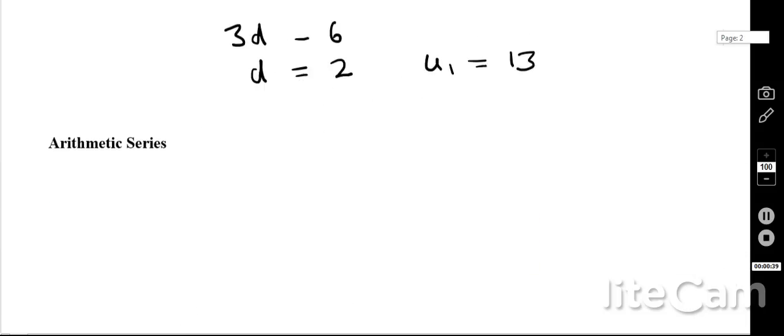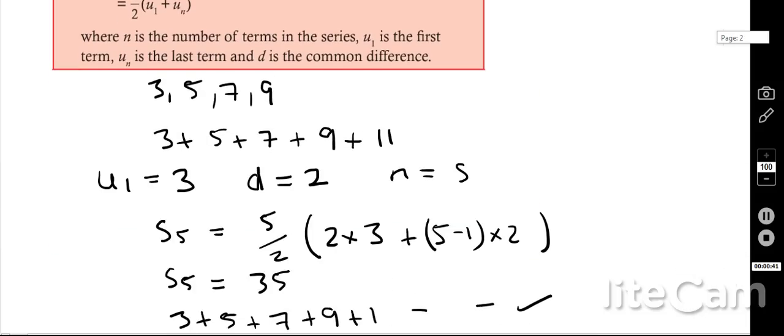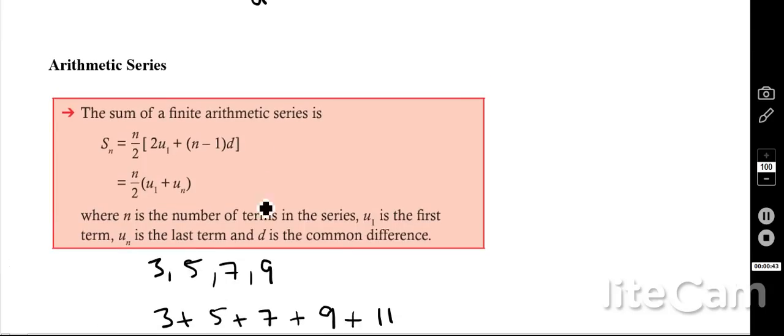We also have a formula, or two formulas, which allow us to add an arithmetic sequence, and that is called a series. We add terms together, and we've got this form here, this top form, and we've got this form underneath when we know the first term and the last term as well.